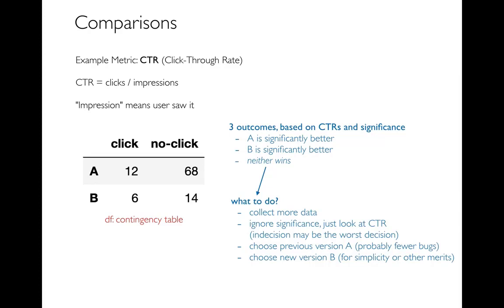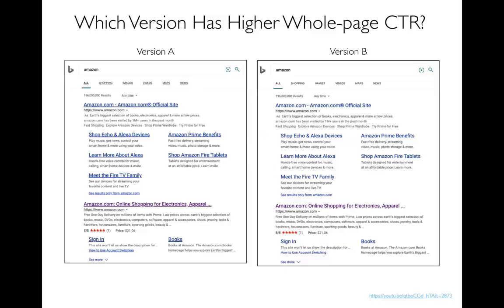There are other cases where version B might be better. Like the example of upgrading from Python 3.7 to 3.8 — we expect neither to win, but we want to keep current with our software. Or maybe version B is simpler code from someone who was just cleaning up without trying to change behavior. In that case, maybe we want the simpler code, so we choose B.